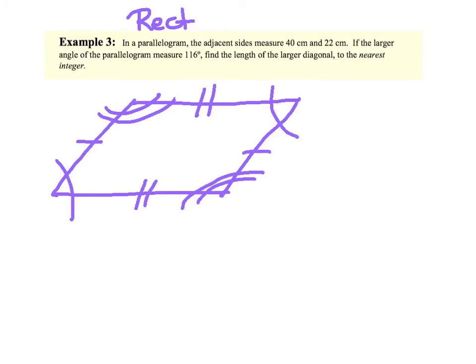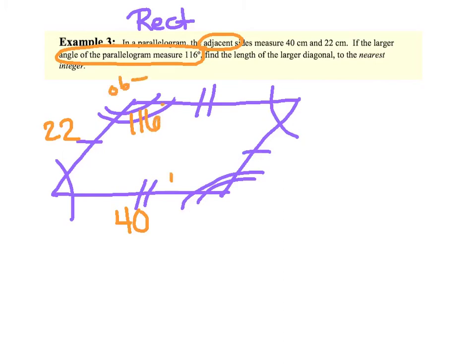In a parallelogram, the adjacent sides — which means next to each other — measure 40 and 22 centimeters. I'm going to label my larger one 40 and my smaller one 22. If the larger angle of the parallelogram measures 116 degrees, use common sense: which angle looks bigger in your picture? I would say the obtuse angle looks larger, so that's 116 degrees. This one is acute, less than 90. Find the length of the larger diagonal — picture drawing two diagonals in. One looks longer, and they want the larger one.